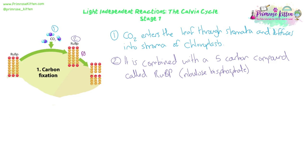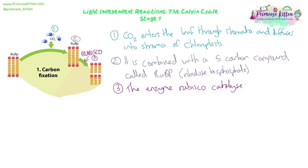This is a chemical reaction, and as always, chemical reactions need to be catalyzed by enzymes. The enzyme that catalyzes the combining of carbon dioxide with RuBP is called Rubisco. That carbon dioxide is now said to have been fixed - it's been pulled out of the atmosphere and fixed into a molecule. The RuBP has been carboxylated - a carbon dioxide molecule has been added to it. So this stage is called either carbon fixation or carboxylation.